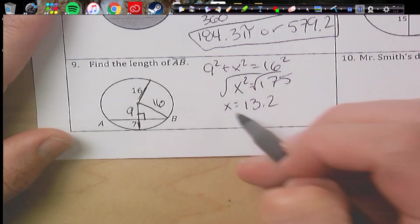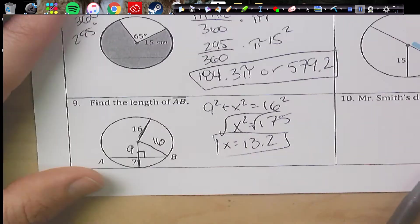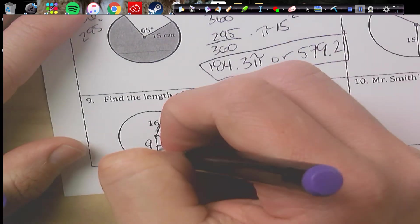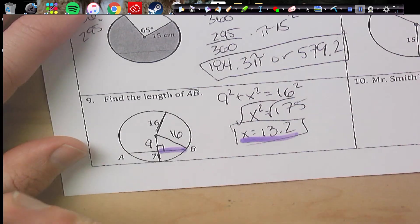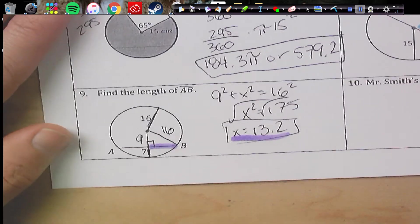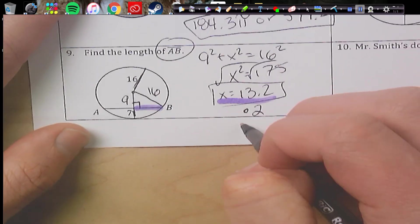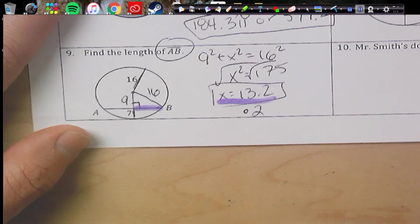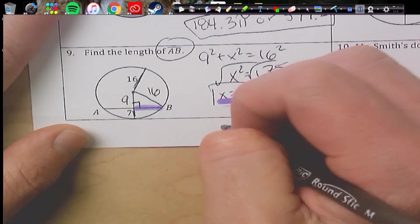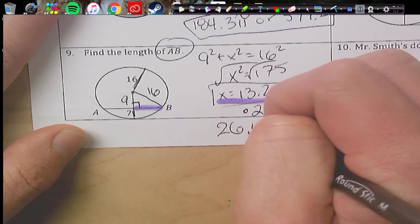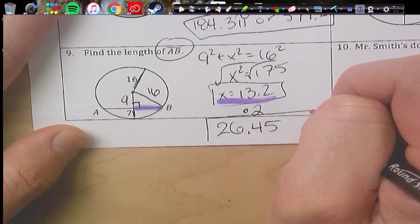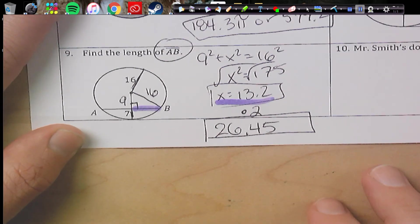Now that's what x equals, but I only found this portion right here. So that's not the whole thing. I want to find all of AB. So we have to multiply that by 2. And if I do that, I should end up with 26.45 as my final answer.